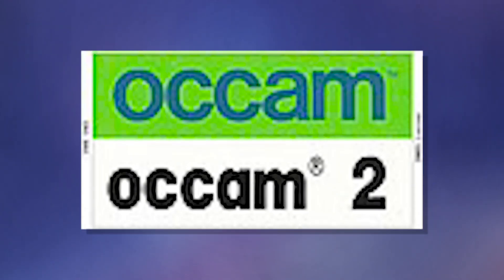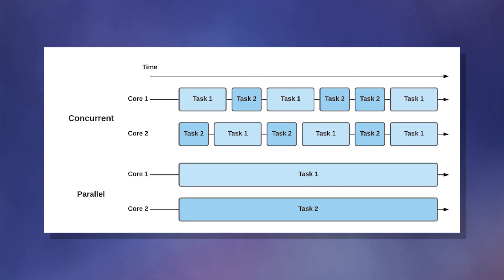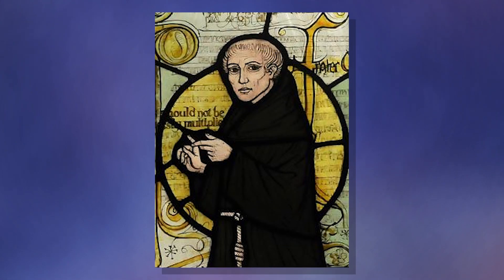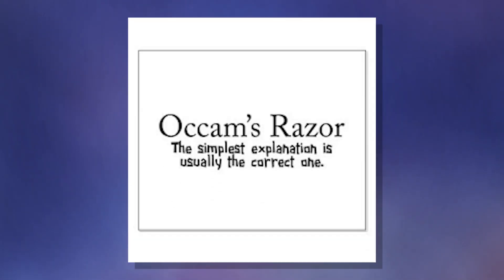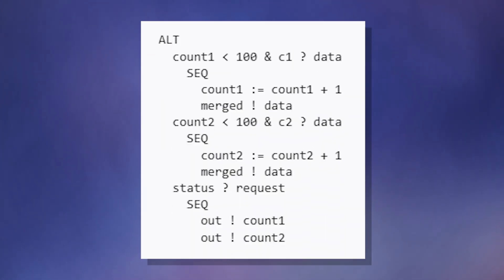Occam — not much to say. It's a programming language designed to do concurrent programming, which means you can make things that do several tasks at once. It's named after the philosopher William of Ockham, and just like the thought experiment of Occam's Razor, this language is mostly designed for simplicity.